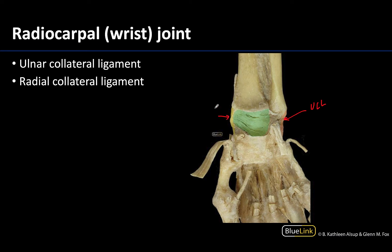Shaded here in yellow is the radial collateral ligament, which is going to extend from the radial styloid process down to the scaphoid — that lateral-most carpal bone of the proximal row of carpals.